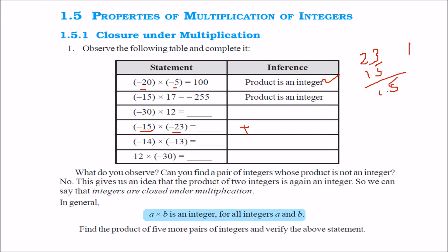So, 5 threes are 15, and the result is 345. So the value, whichever it is, shows that integers are closed under multiplication. That means, for A and B, if they are integers, for all values of A and B, the result will always be an integer.